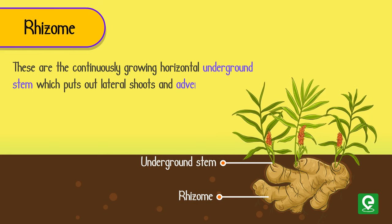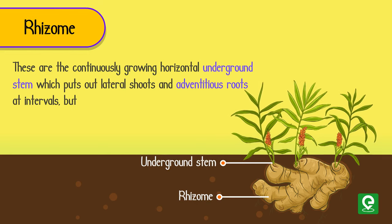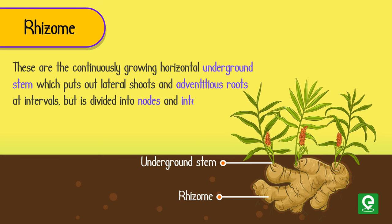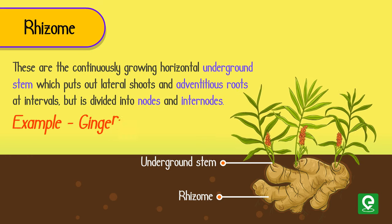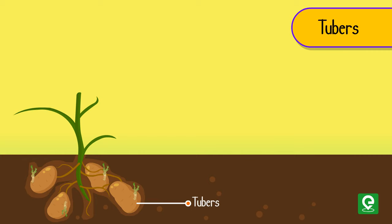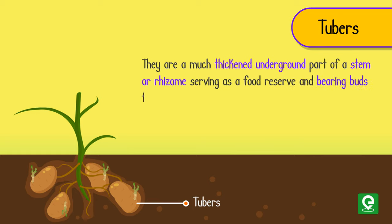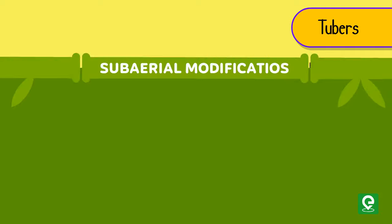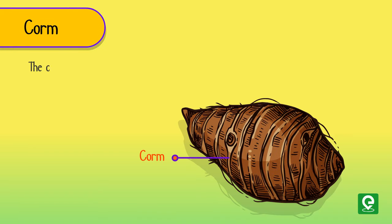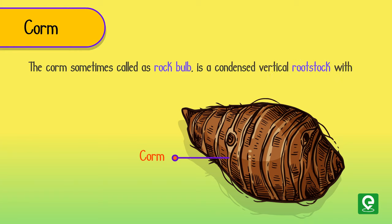Rhizome: continuously growing horizontal underground stems which put out lateral shoots and adventitious roots at intervals, divided into nodes and internodes. Example: ginger. Tubers: a much thickened underground part of a stem or rhizome serving as a food reserve and bearing buds from which new plants develop. Example: potato.